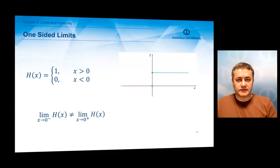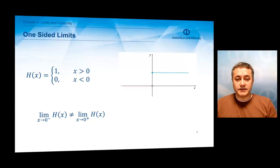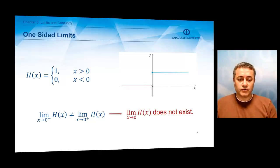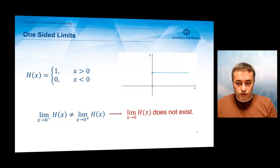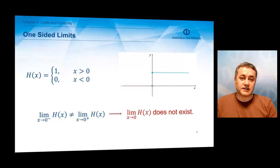The limit of this function at x equals 0 from left and right are not equal. So there is no limit, because as we were defining the limit of a function, we say there must be a unique number L. However, here there is no unique number — there is a 0 and there is a 1, which are not equal, so the limit does not exist.